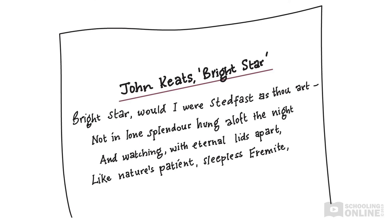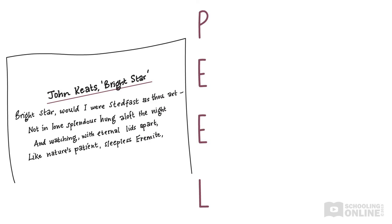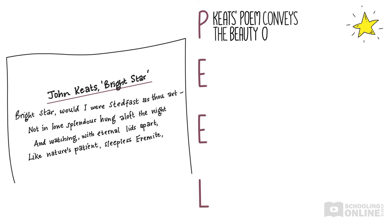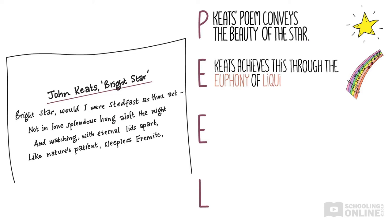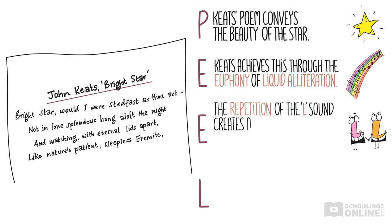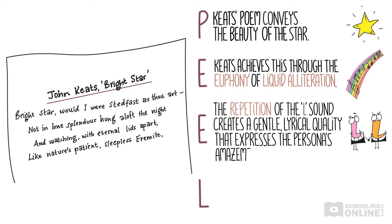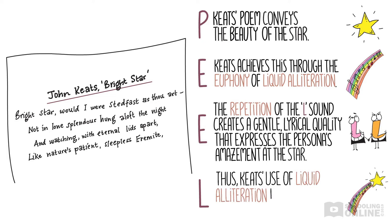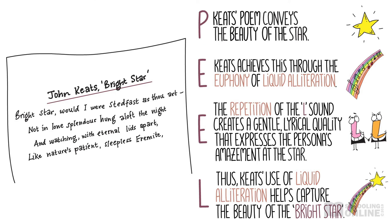Take the first four lines of Bright Star by John Keats: 'Bright star, would I were steadfast as thou art, not in lone splendour hung aloft the night and watching, with eternal lids apart, like nature's patient, sleepless Eremite.' Let's analyse it using another PEEL paragraph. Keats' poem conveys the beauty of the star. Keats achieves this through the euphony of liquid alliteration. The repetition of the L sound creates a gentle, lyrical quality that expresses the persona's amazement at the star. Thus, Keats' use of liquid alliteration helps capture the beauty of the bright star.